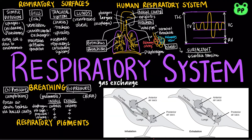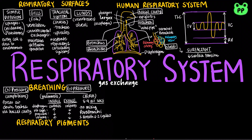Birds have 8 or 9 air sacs that allow air to pass through the lungs in one direction only, so that incoming fresh air does not mix with air that has already carried out gas exchange. Parabronchi are tiny tubes in birds' lungs that are highly efficient in gas exchange. Each breath requires two cycles of inhalation and exhalation to ensure no mixing of air.